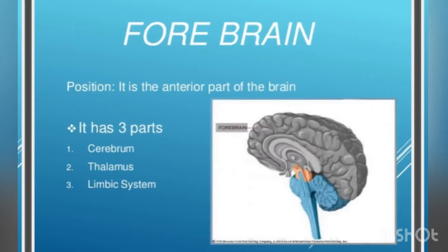Forebrain: Its position is the anterior part of the brain. It has three parts: cerebrum, thalamus, and limbic system.